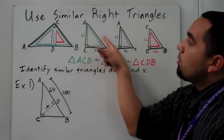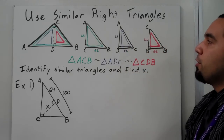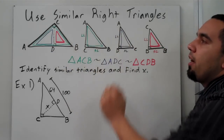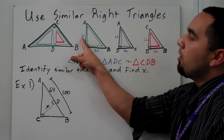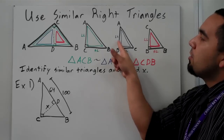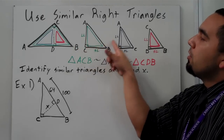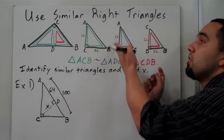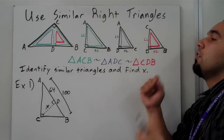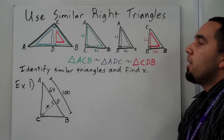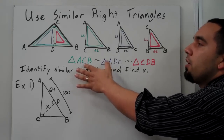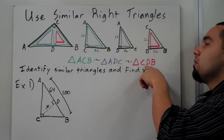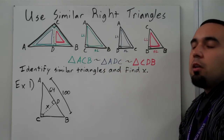What I did was redraw all three right triangles in the same order so that they're all facing the same way. I wrote my long leg and my short leg so that I know my long legs are all in the same spots and my short legs are all in the same spots. They're all facing the same way with the hypotenuse on the left, so I can see that triangle ACB is similar to triangle ADC, which is also similar to triangle CDB.